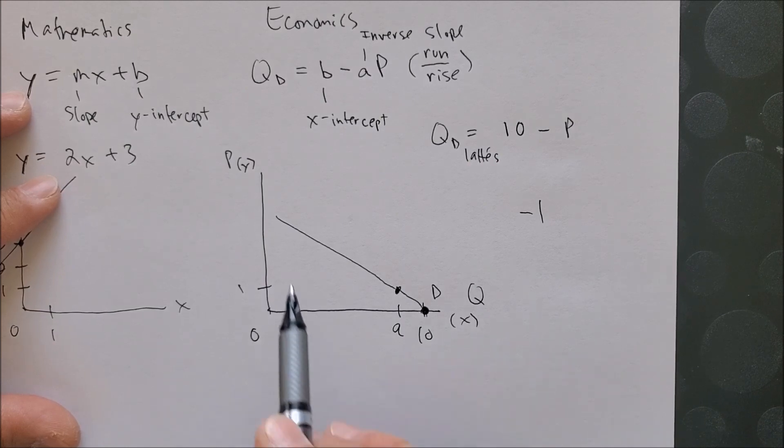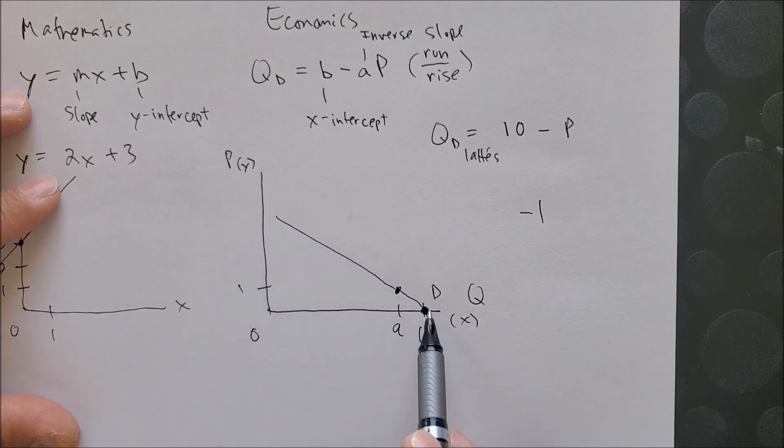That's why we see a downward sloping curve, because of the inverse relation between quantity and price.